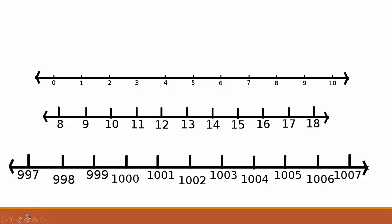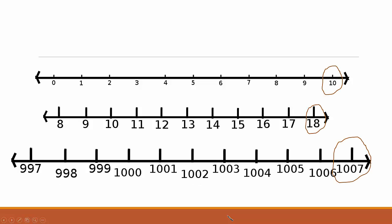The numbers on number lines are called coordinates. Each of these numbers is a coordinate. What are the biggest coordinates shown on each of these lines? 10, 18, and 1007 are the greatest coordinates on these lines.